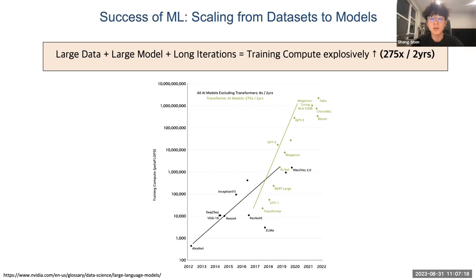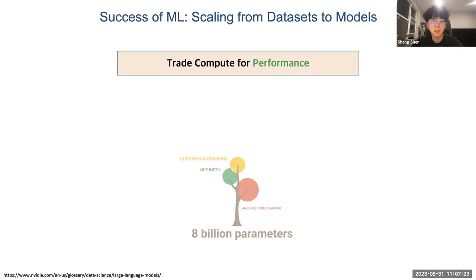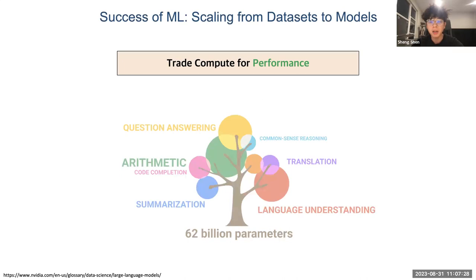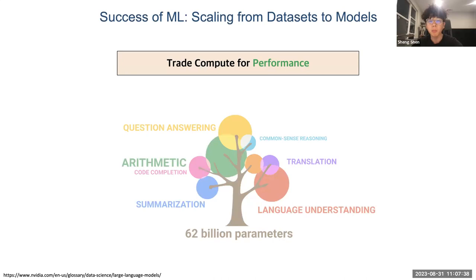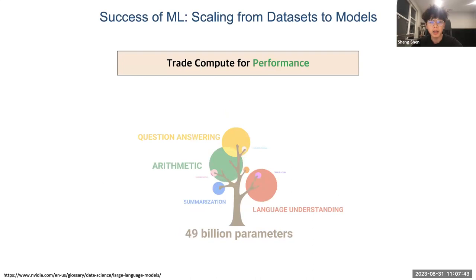One fundamental question is why we want to do this training and why this training could be expensive. A primary factor that drives this advancement is the ability to exchange compute power for accuracy. Simply by using larger models and datasets or increasing training iterations, our model's performance will be enhanced.